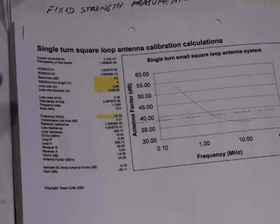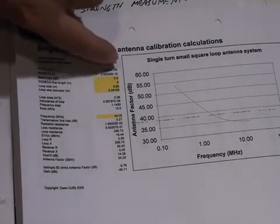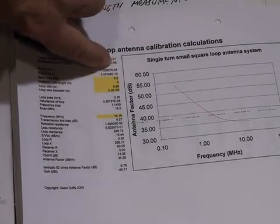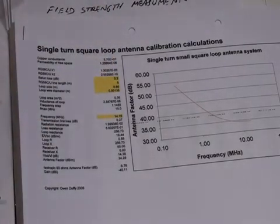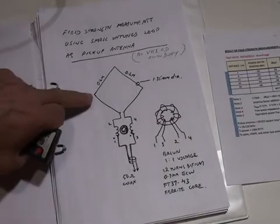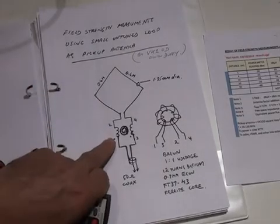It also takes into account such things as a figure for the balun loss, the 1 to 1 balun loss, and the length of the cable between the pickup antenna and the power meter. This is a simple sketch I've made of the loop and the 1 to 1 voltage balun.